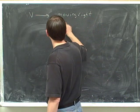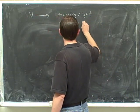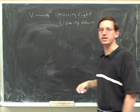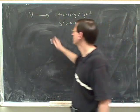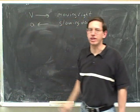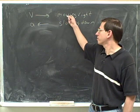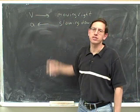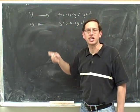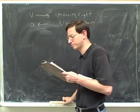Now suppose I tell you we're slowing down — now you know which way we're accelerating. We must be accelerating anti-parallel to the velocity. So again, just telling you which way we were moving didn't tell you the acceleration. Only when I tell you whether we're speeding up or slowing down can you figure out the acceleration. The acceleration doesn't tell you which way you're moving.